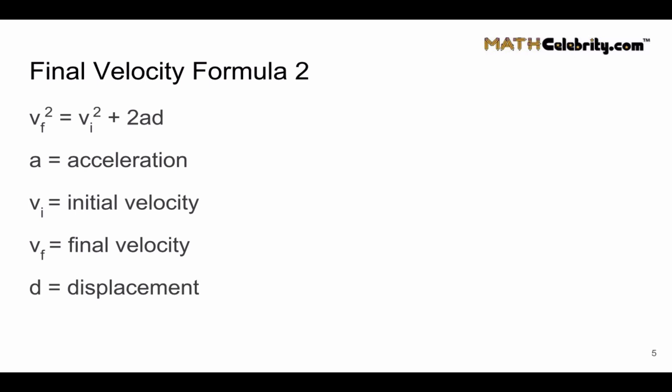And we have our fourth and final kinematic equation or as I like to call it final velocity formula two. v sub f squared equals v sub i squared plus two times a times d. And once again a is acceleration, v sub i initial velocity, v sub f final velocity, and d displacement.